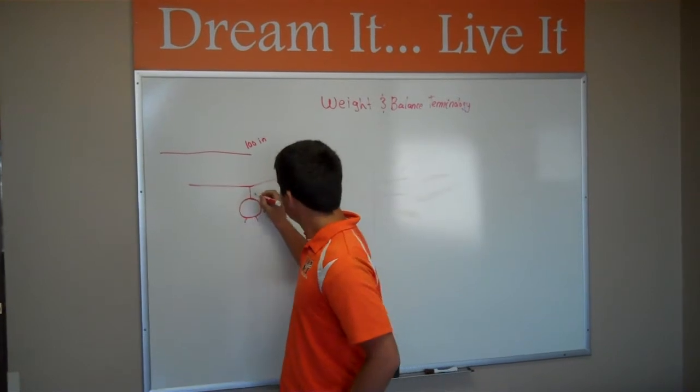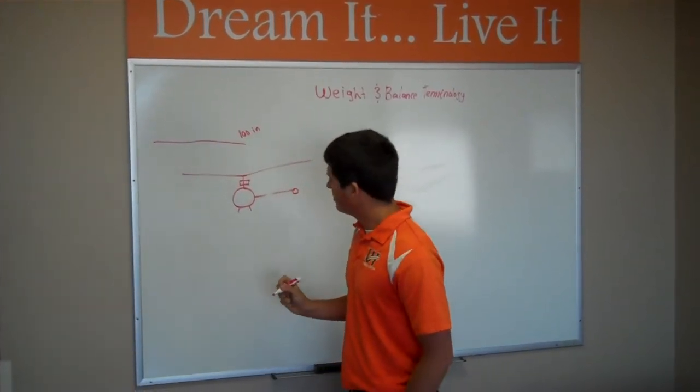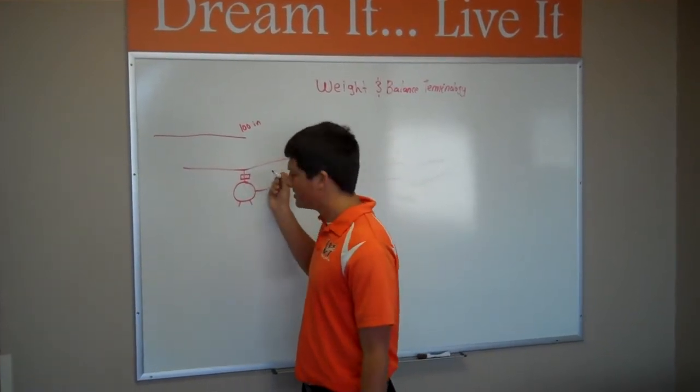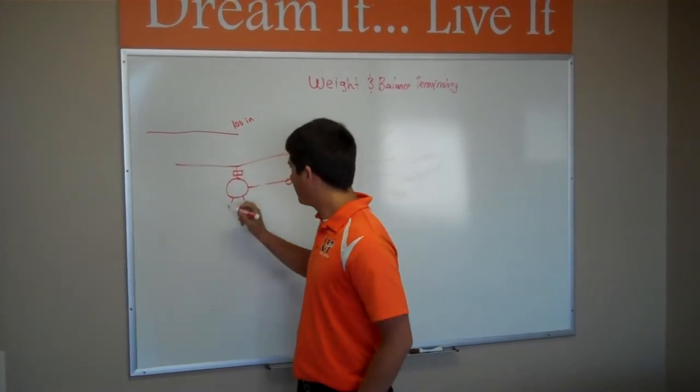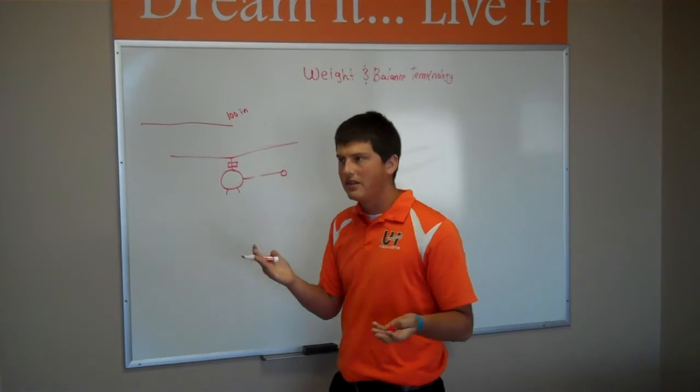Then we have our weight and balance envelope. When we do our weight and balance, we're not trying to balance inside the whole helicopter. It's just a small little area above, around the mast that we have to get our weight and balance into.